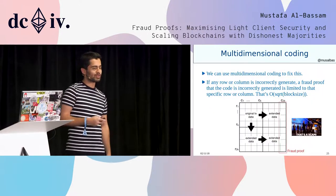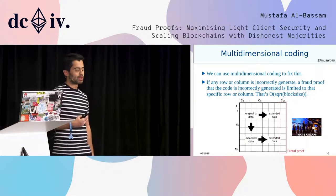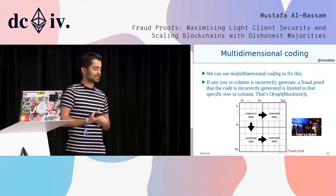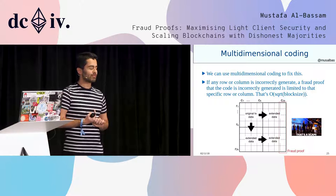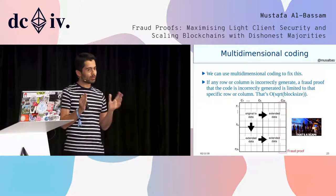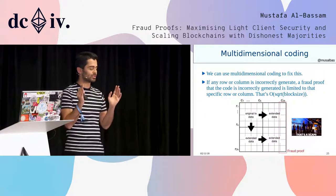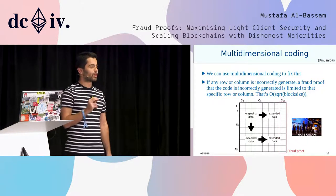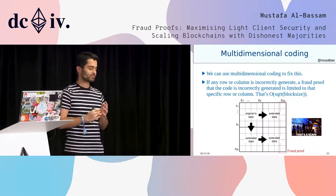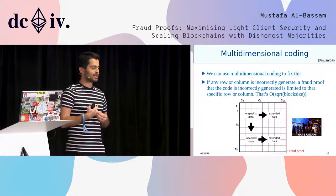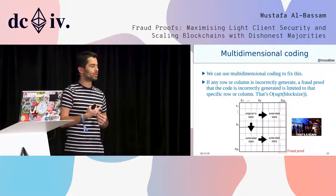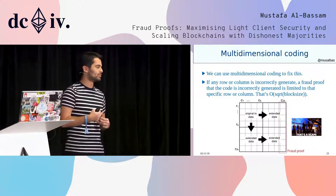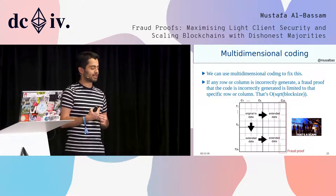The way to fix this is to use multidimensional erasure coding. The idea is that you arrange your block data into a square — you cut it up into a number of pieces and arrange those pieces into a square. Then you apply the erasure coding one by one on each row and column of this square until you can extend it into a bigger square. If one of these rows or columns were incorrectly extended, the size of the fraud proof would be limited to a single row or column, since the light client would only need proof that one row or column is incorrectly computed to know the block is invalid.